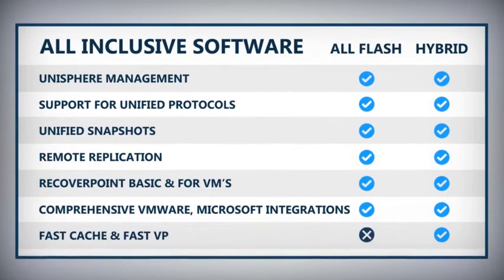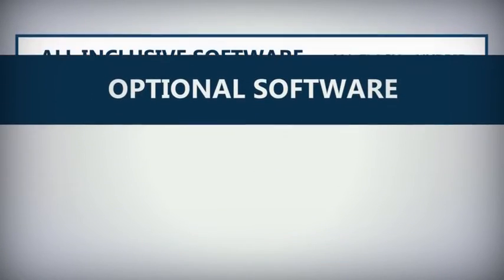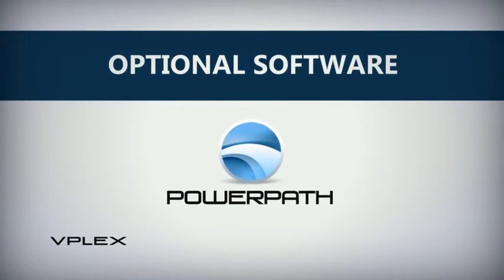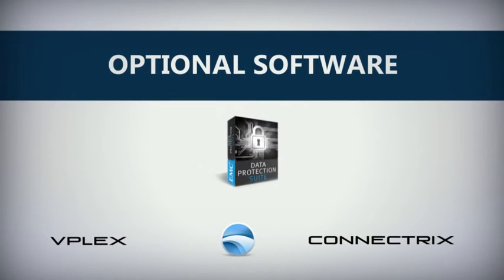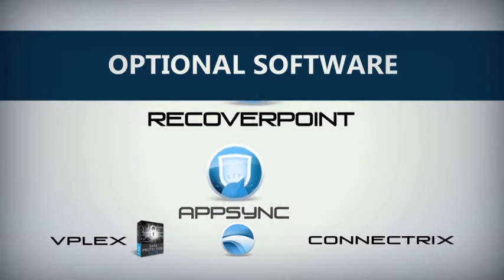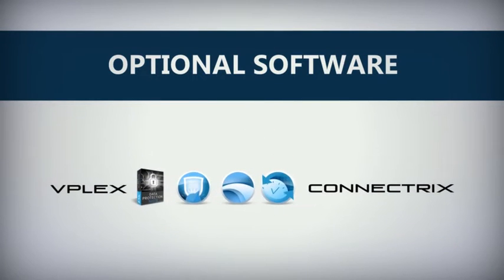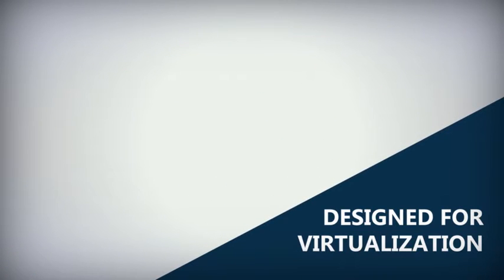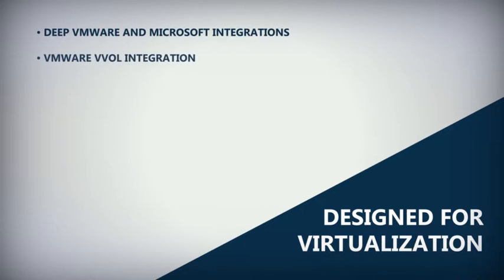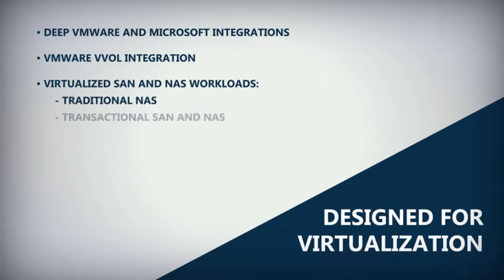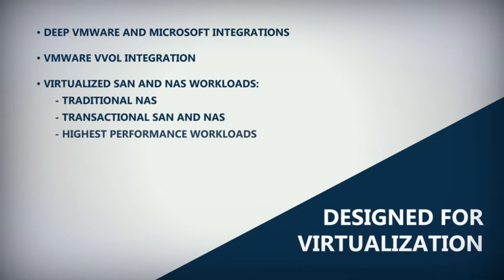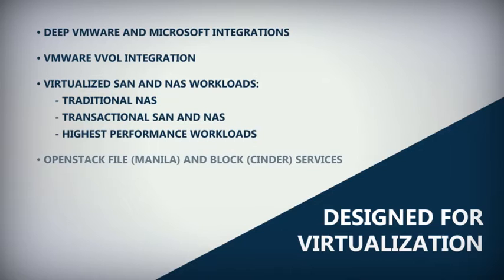FastCache and FastVP are provided. Optional software titles include support for vPlex, PowerPath, Connectrix, EMC data protection platforms, and advanced AppSync and RecoverPoint solutions. Unity is designed and optimized for virtualization including support for deep VMware and Microsoft integrations, VMware vVol integration, virtualized SAN and NAS workloads, traditional NAS, transactional SAN and NAS, highest performance workloads, and OpenStack File Manila and Block services.